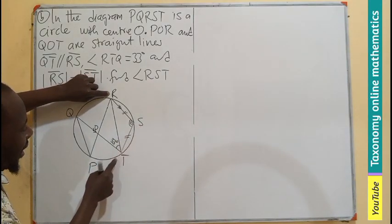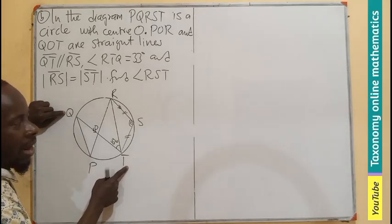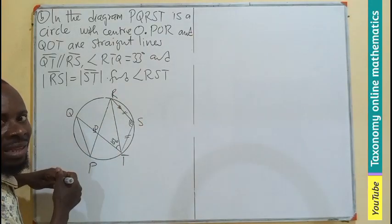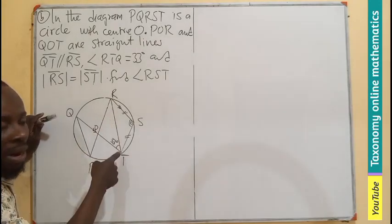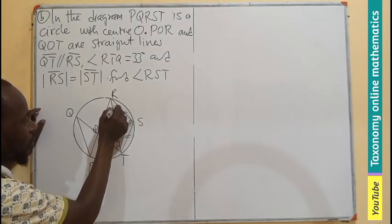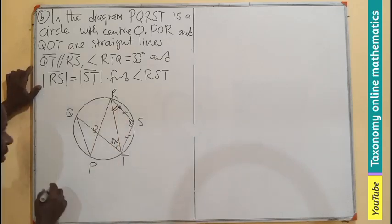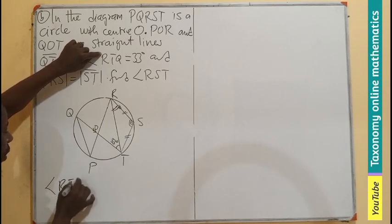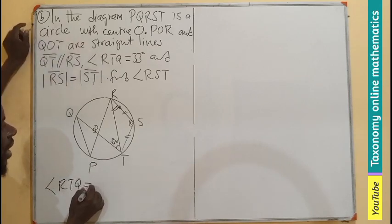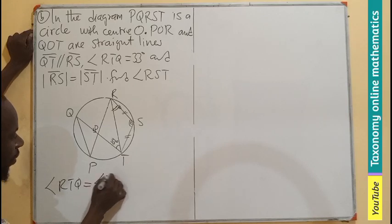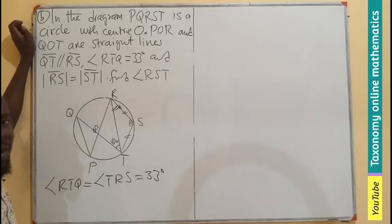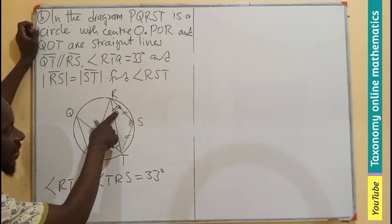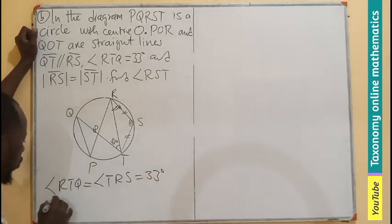Since RS and QT are parallel lines and RT is a transversal connecting them, the transversal produces alternate angles. Therefore, the angle RTQ that we have been given is the same as angle TRS. So angle TRS is also 33 degrees, using the alternate angles property.